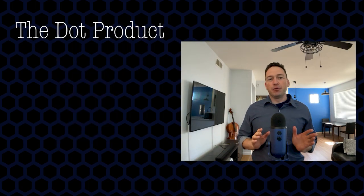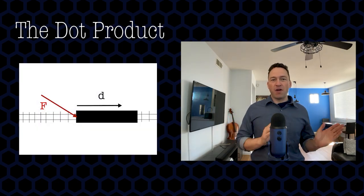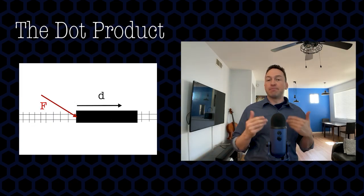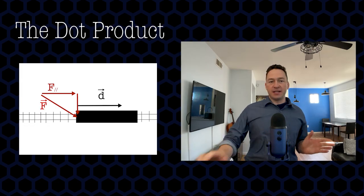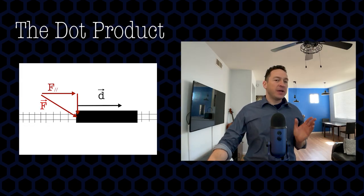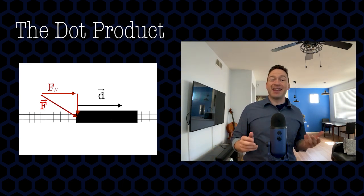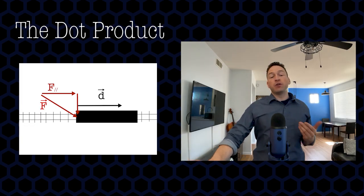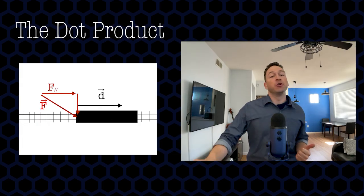It's not always this simple, though. Think of a train that's able to move back and forth on a track. Imagine that some incredible wind blows at an angle to the train, pushing it forward. To figure out the work that the wind does in this kind of case, we have to break the wind vector into two separate components: one which is parallel to the track — a component that actually contributes to the train's motion — and a second component which is perpendicular to the track, a component which does not contribute to the train's motion.